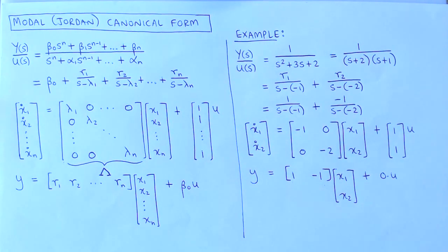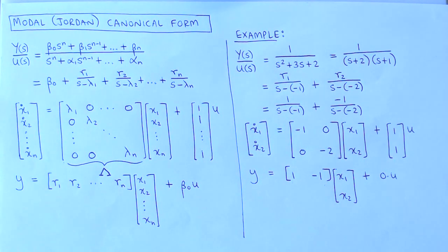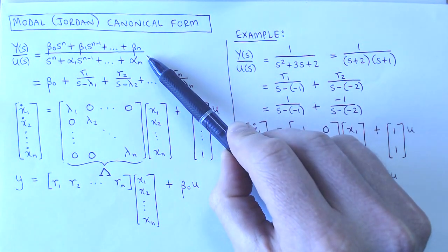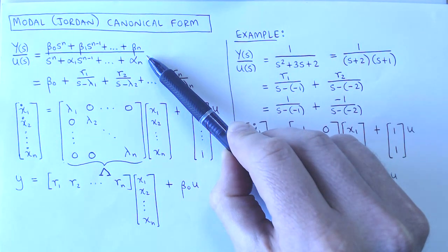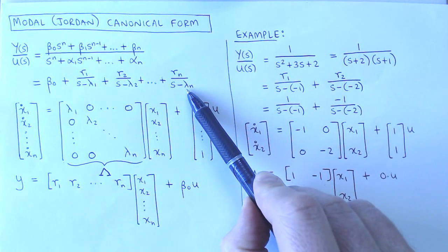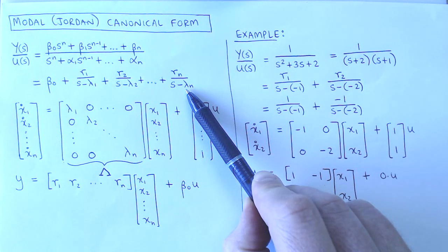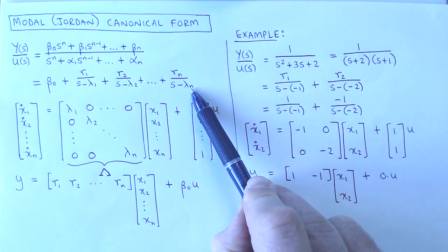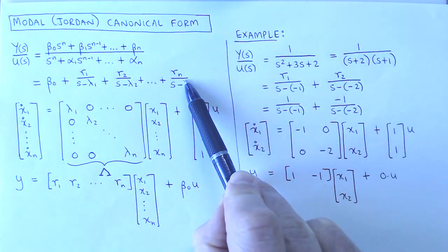The third standard form we look at is the modal canonical form, also called the Jordan canonical form. Suppose we have the same transfer function of an nth order system as before, and suppose for now that the system only has real poles that are distinct. We can then use partial fraction expansion to write the transfer function as a sum of first order transfer functions, where lambda 1 to lambda n are the poles, and R1 to Rn are the residuals of the expansion.